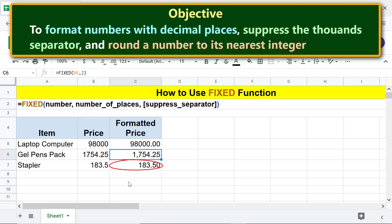Lastly, let's round this number to its nearest integer by setting the number of places attribute value to 0. Click this cell and edit the formula.